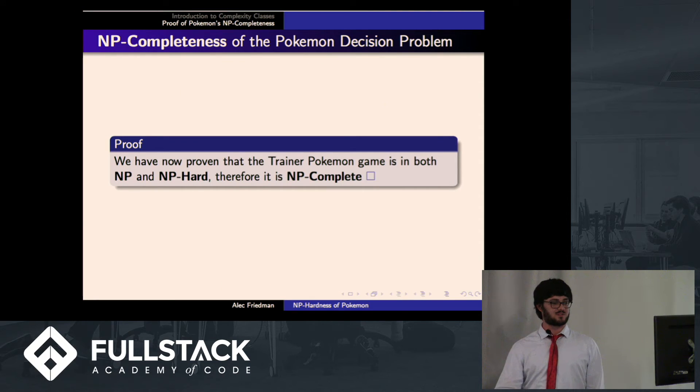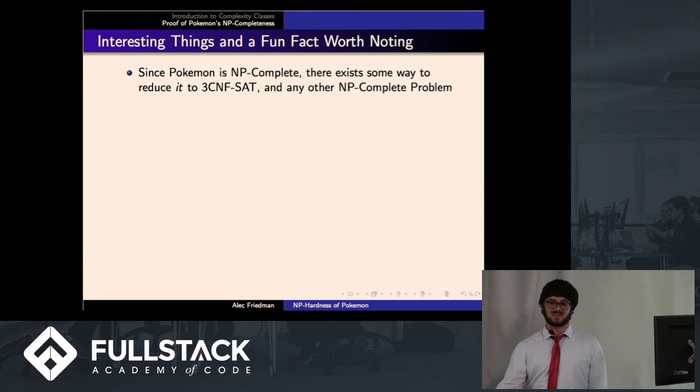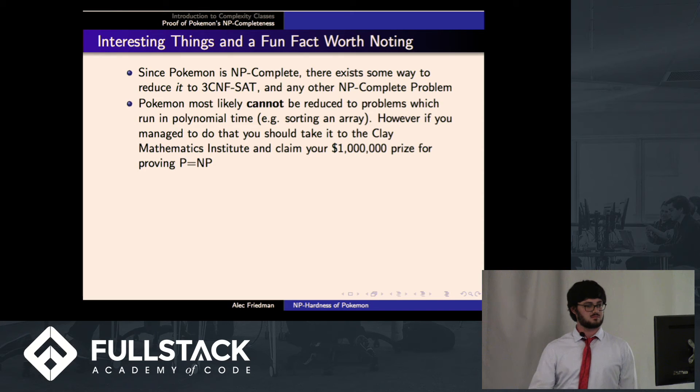So basically now we have proven that the trainer Pokemon problem is both NP and NP-hard, therefore it is NP-complete. So it's a pretty crazy result because what this means is that there's actually some way to reduce Pokemon into 3C and Fsat. How to do that, I don't know. It's probably a very, it would probably be a very crazy proof, but it does exist because of the nature of NP-complete problems. Any NP-complete problem can be reduced to any other NP-complete problem. Now, Pokemon can most likely not be reduced to a problem which runs in polynomial time. For example, sorting a ray. But if you somehow manage to do that, you should probably go to the Clay Mathematics Institute and there's a million-dollar prize waiting for you because you would have solved P equals NP if you managed to do that.